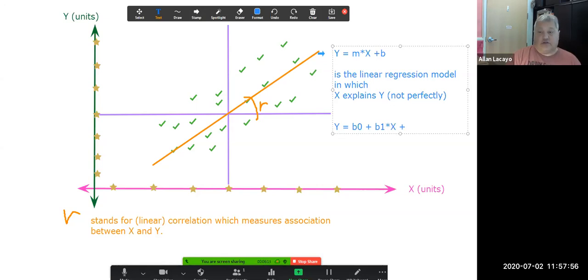Such that there's an additional term, and this term is called the residual or unexplained value of Y.